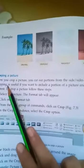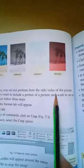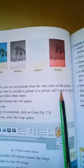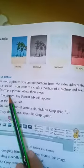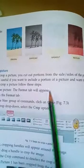Now cropping a picture. When you crop a picture, you cut out portions from the sides of the picture. Cropping is useful if you want to include a portion of a picture and want to cut out the rest. To crop a picture, follow these steps. Select the picture, the Format tab will appear.